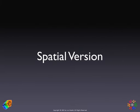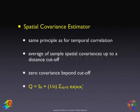We will now extend this principle to the spatial domain, using exactly the same approach as in the time domain. We need a spatial covariance estimator. The principle is the same: we construct this estimator by averaging spatial covariances, meaning cross-products of observations and residuals at two different locations.